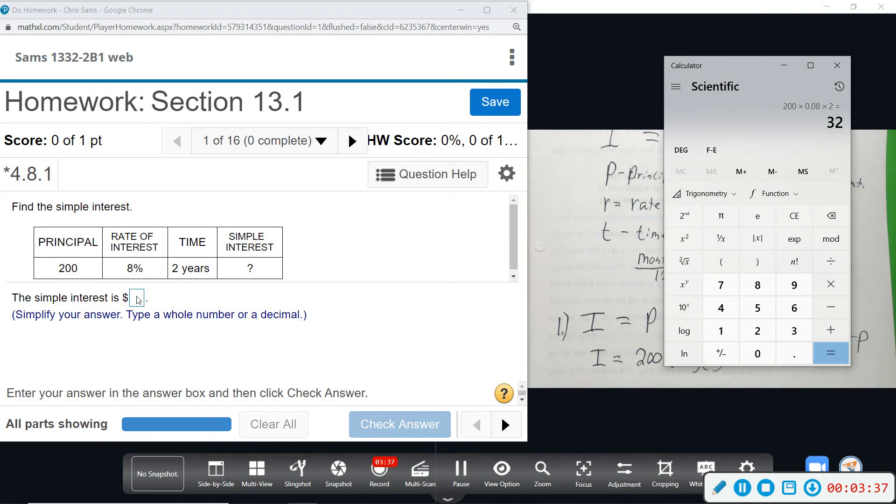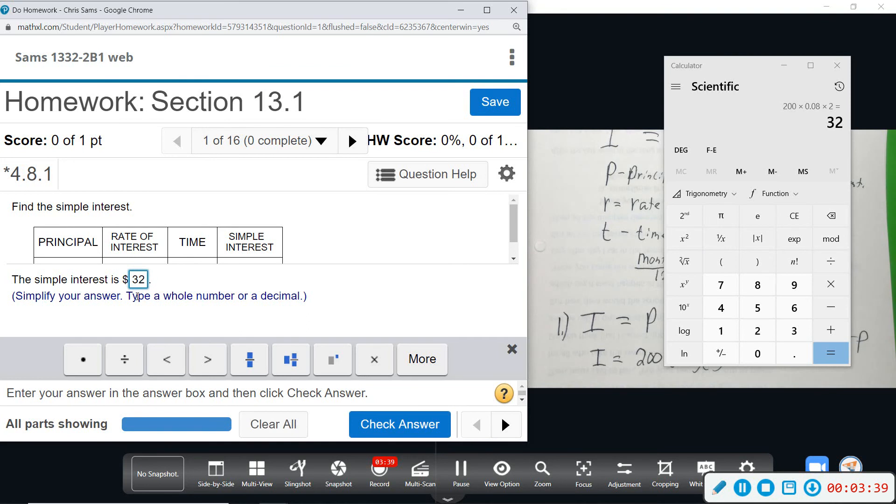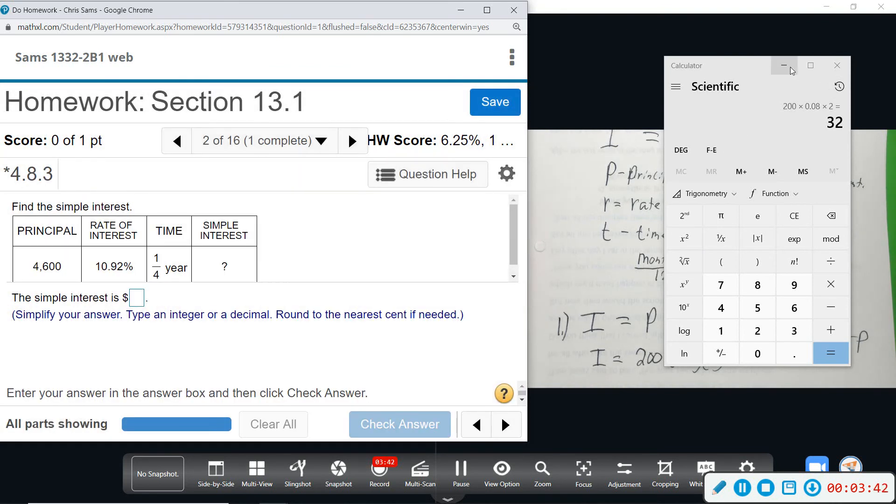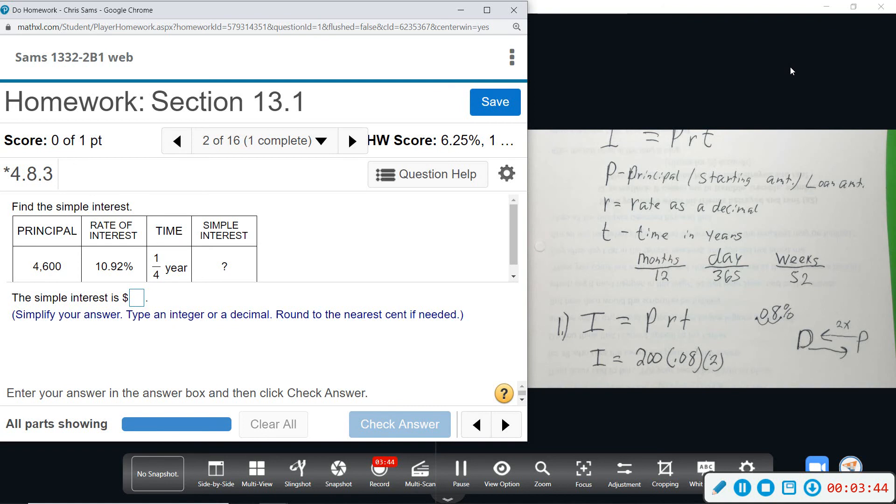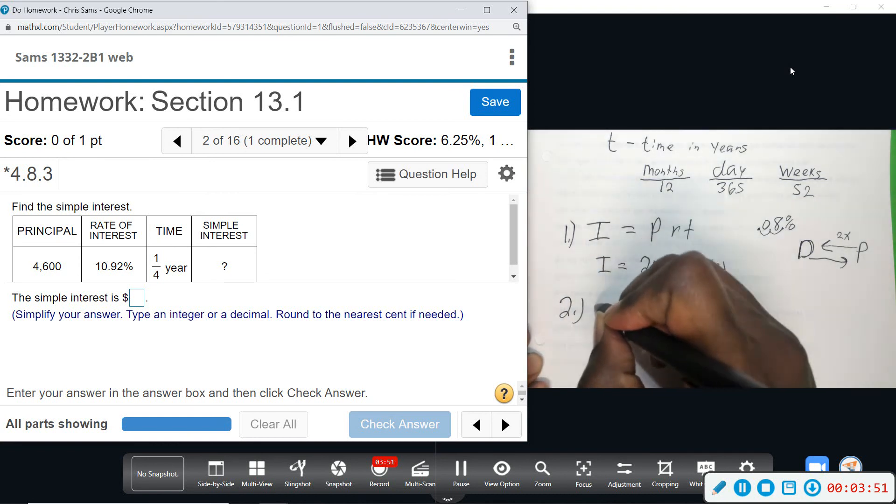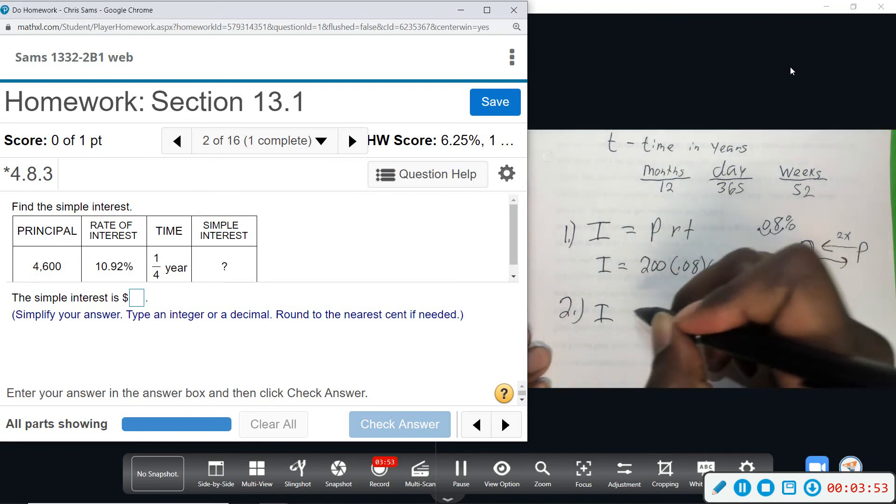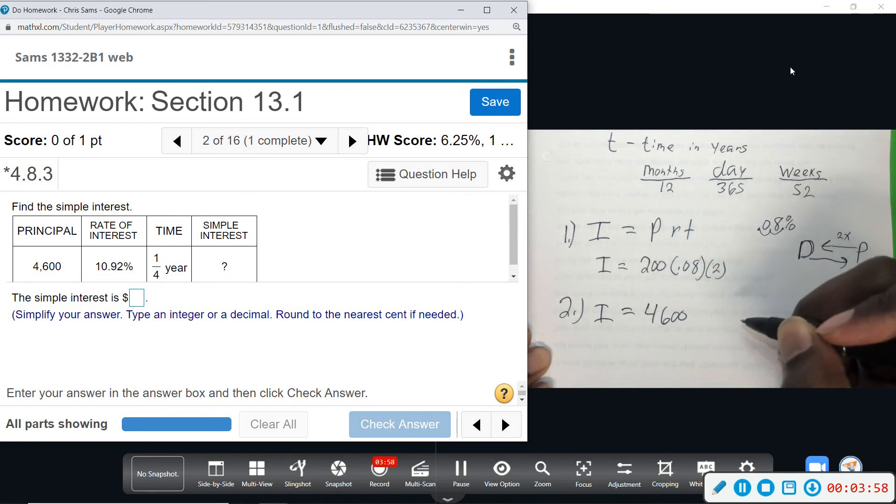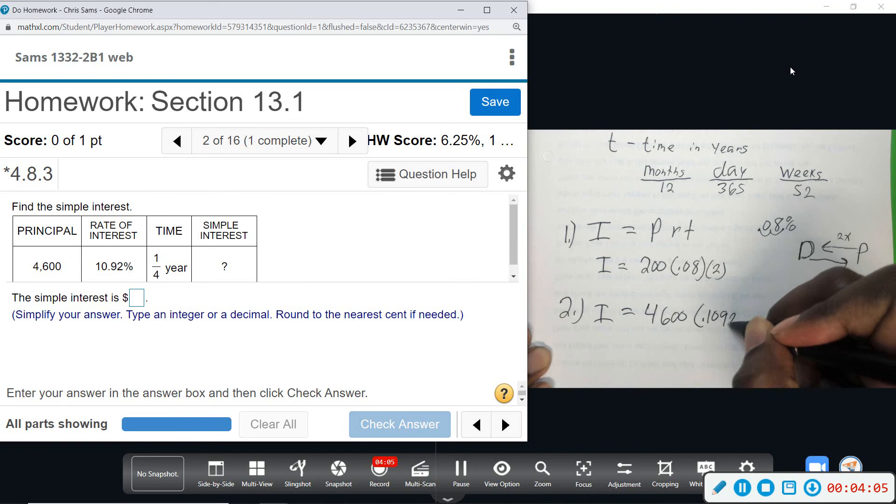All right, number two. They give us the same setup and the numbers are given, so we want to find simple interest. So we're given 4,600. The interest rate is 10, so two times to the left, 0.1092, and then one-fourth of a year. So you can just do one-fourth or you can turn it to a decimal as 0.25, either way.